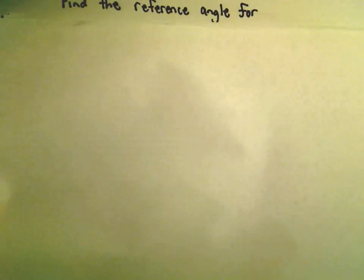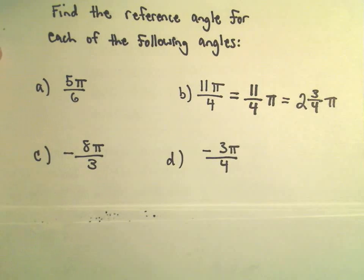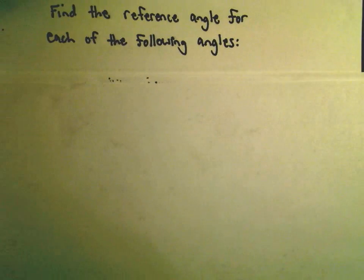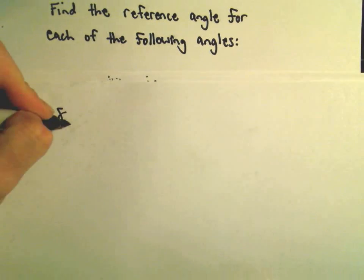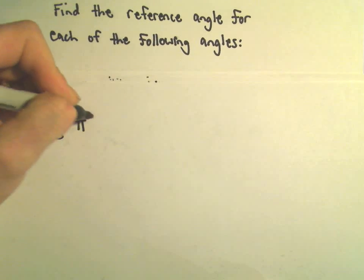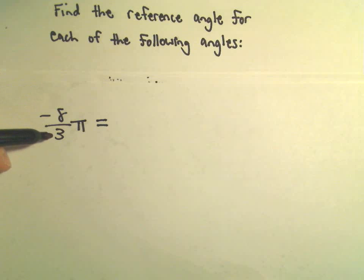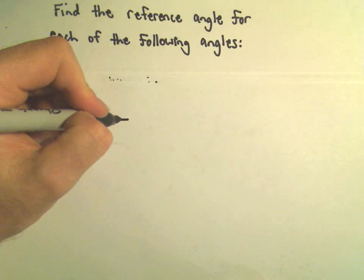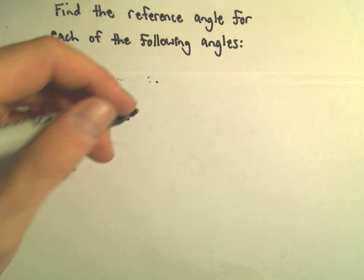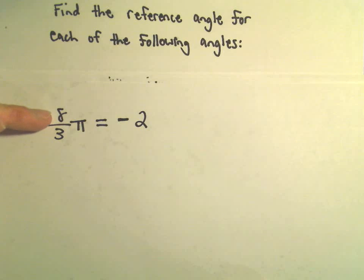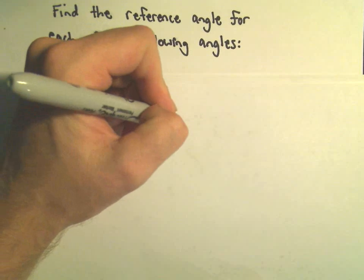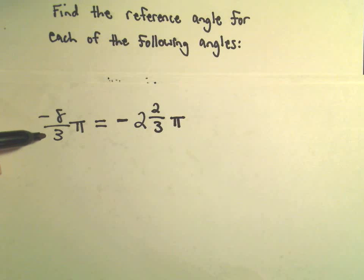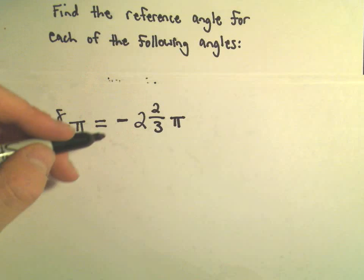Let's do our other ones as well here. I think we said negative 8 over 3 π was our next one. I'm going to do the same thing. 3 goes into, so forget about the negative for a second. 3 goes into 8 two times, I believe you would have 2 as a remainder. So we can write negative 8 thirds as negative 2 and 2 thirds π.